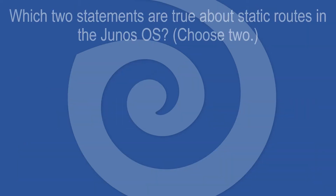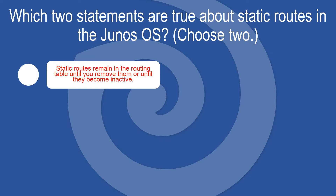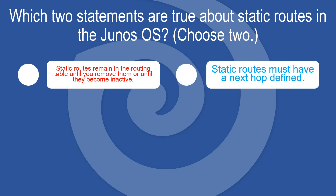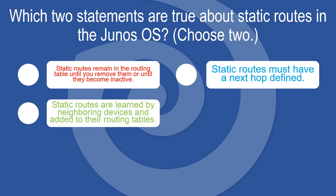Which two statements are true about static routes in the Junos OS? Choose two. Static routes remain in the routing table until you remove them or until they become inactive. Static routes must have a next hop defined.